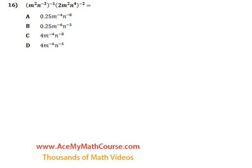Question 16. So we have m squared n to the negative 3 to the power of negative 1 times 2m squared n to the 4 to the power of negative 2.